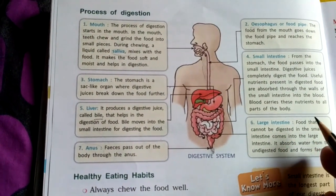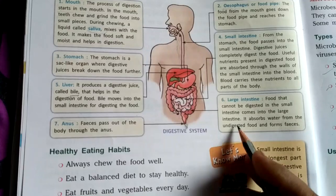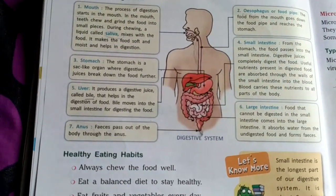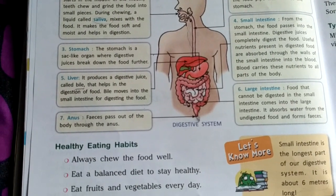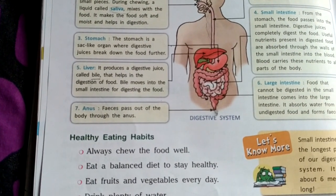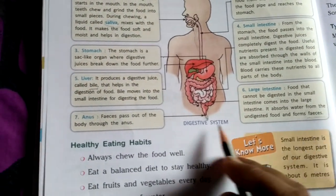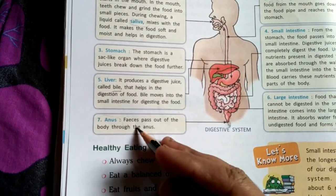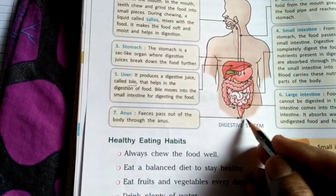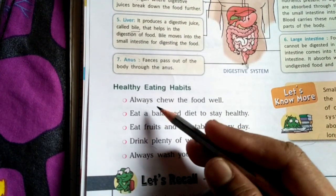Food that cannot be digested in the small intestine passes into the large intestine, which absorbs water from the undigested food and forms feces — the solid waste produced by our body. The undigested food items are converted into solid waste or feces. The function of the anus, the seventh organ, is to pass the feces out of the body.